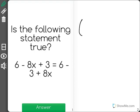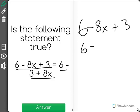Now I'm going to take these and actually write them one on top of the other so we can see what they look like. There's the first one, and our second one is 6 minus 3 plus 8x.